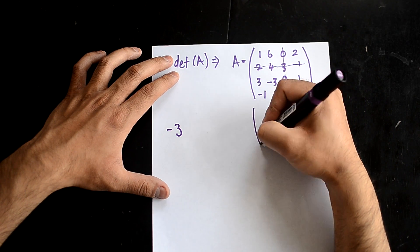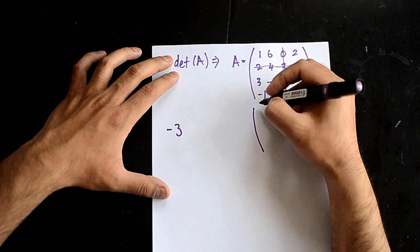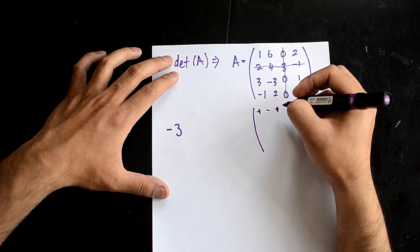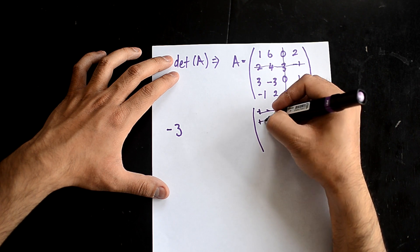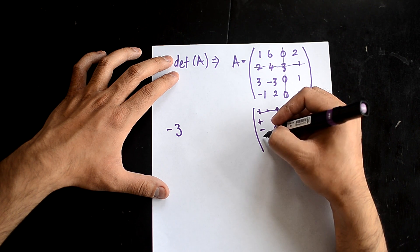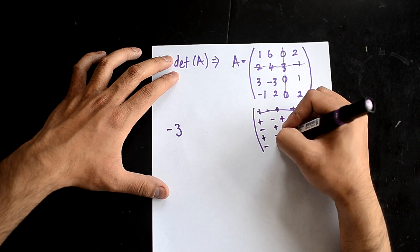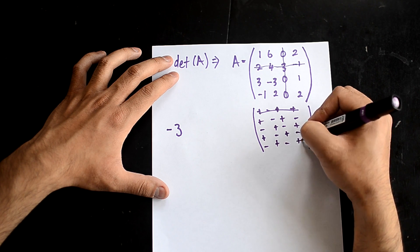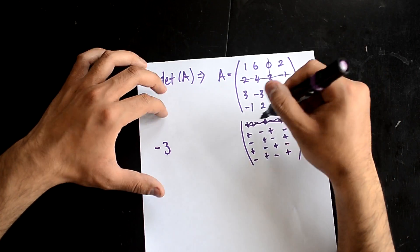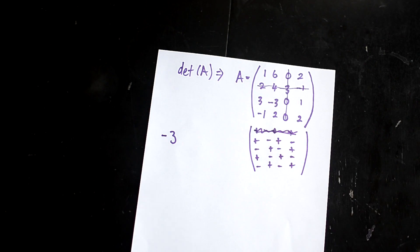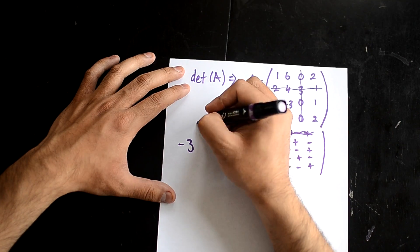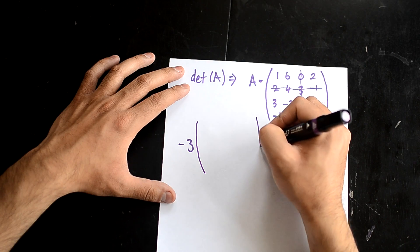A way of drawing this out is like this: plus, minus, plus, minus; minus, plus, minus, plus; plus, minus, plus, minus; minus, plus, minus, plus. So as you can see, if I correspond this matrix to this sign matrix, everything is assigned a positive or a negative. Since I've chosen this 3 and its position is negative, it's a negative 3.